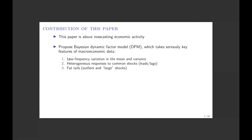The features I'm talking about are: first, low-frequency variation in the mean and the variance — slow moving trends in both the first and second moment. Second, something we call heterogeneous responses to common shocks, which materializes as different patterns of leads and lags between various indicators. Finally, we'll see how the presence of fat tails and outliers impacts the process of nowcasting economic activity, and how to model those explicitly.